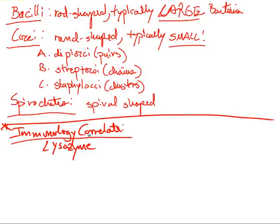The cell walls of gram-negative bacteria contain an endotoxin, which is a lipopolysaccharide. Another immunology correlate: many components of the bacterial cell wall are antigenic and can be assayed to determine the etiology of an infection.